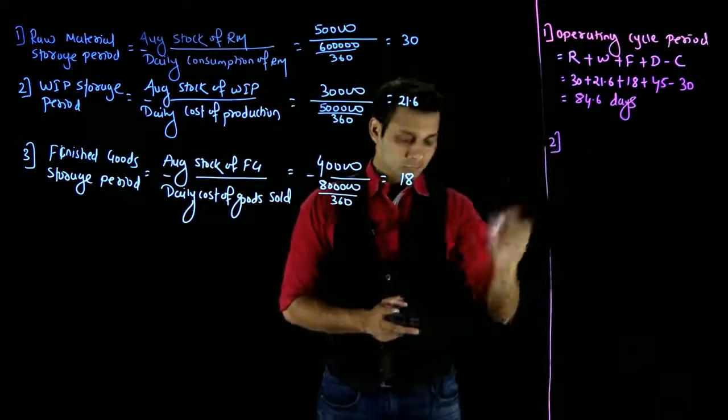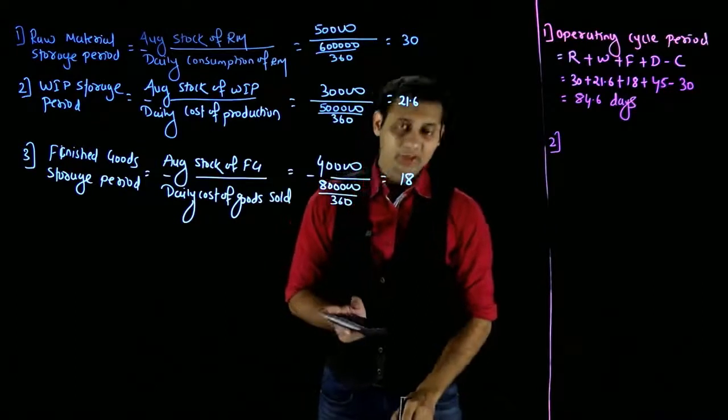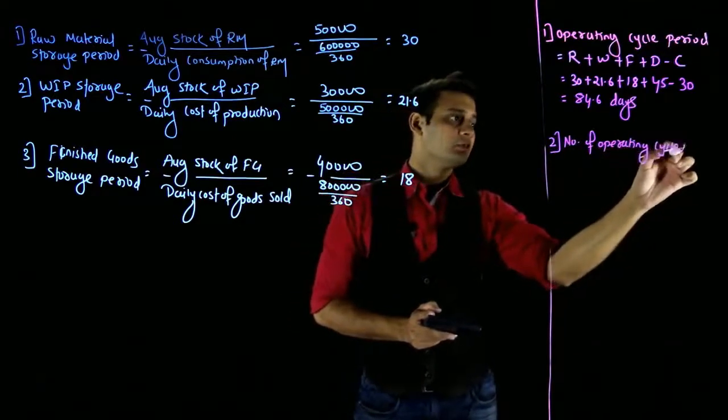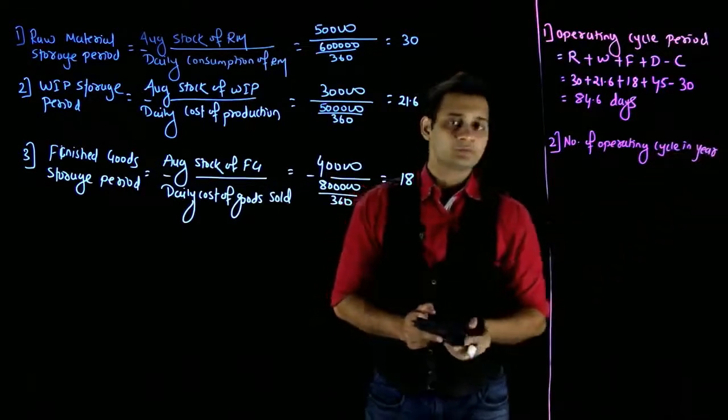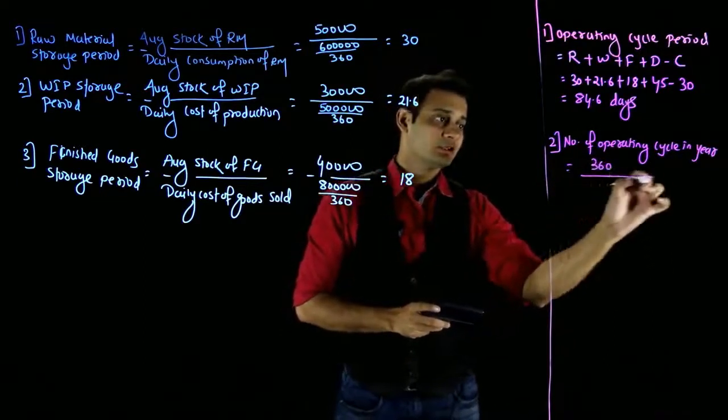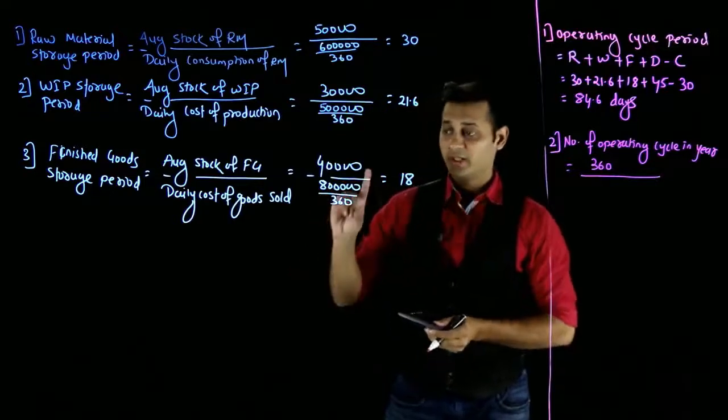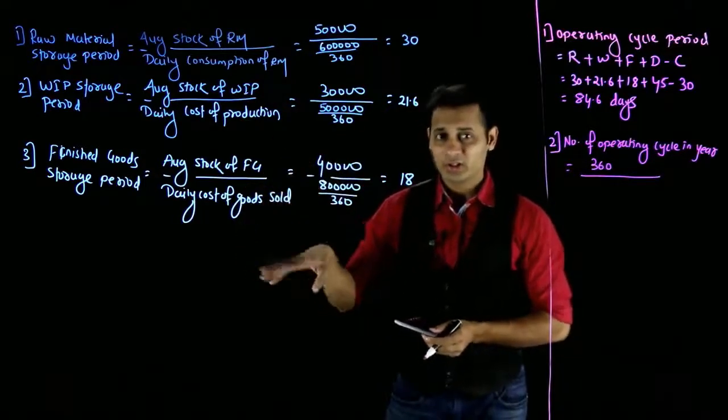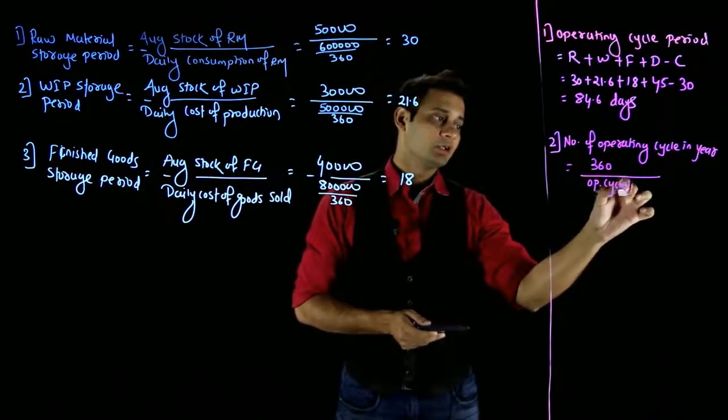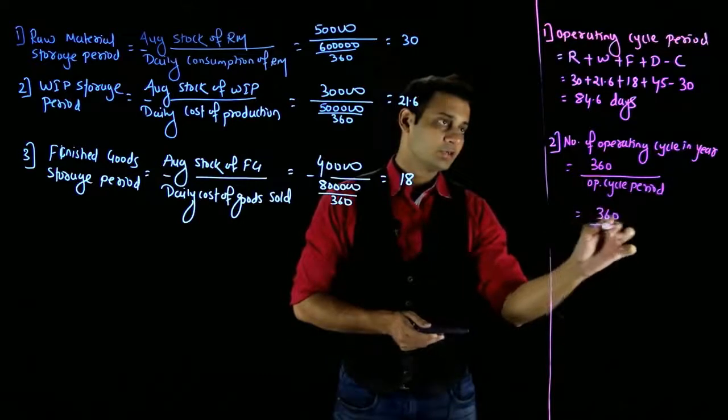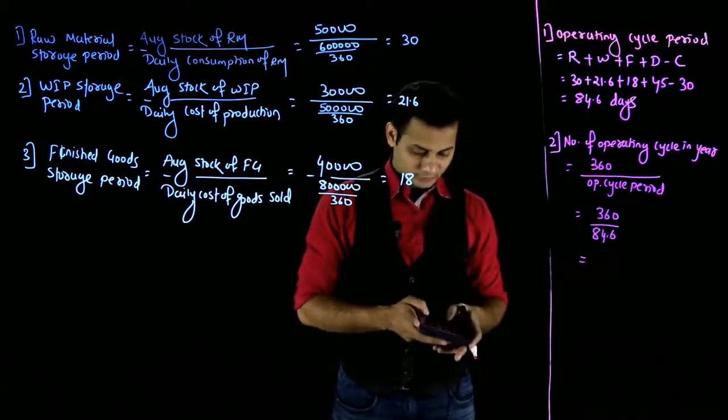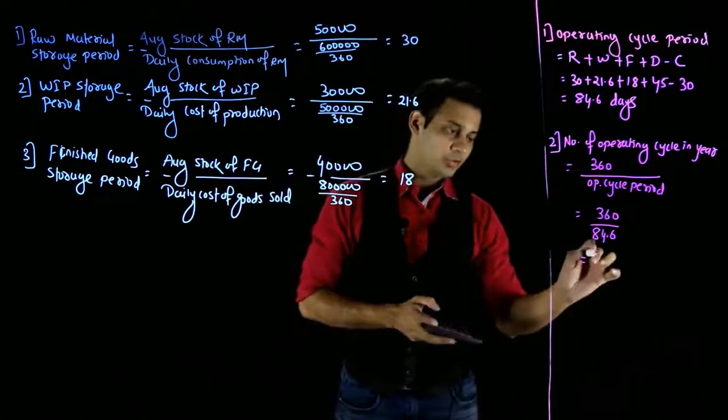Now, second item, I'm going to ask you how many operating cycles complete? Number of operating cycles in year. You think how many times? If you look at the second item, 84,600. So in the year, only 4.255 times.